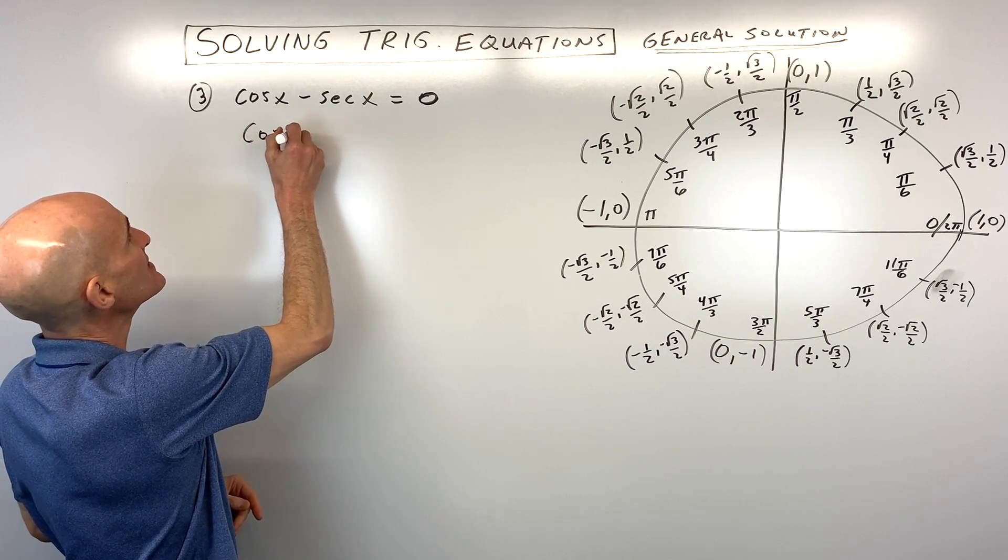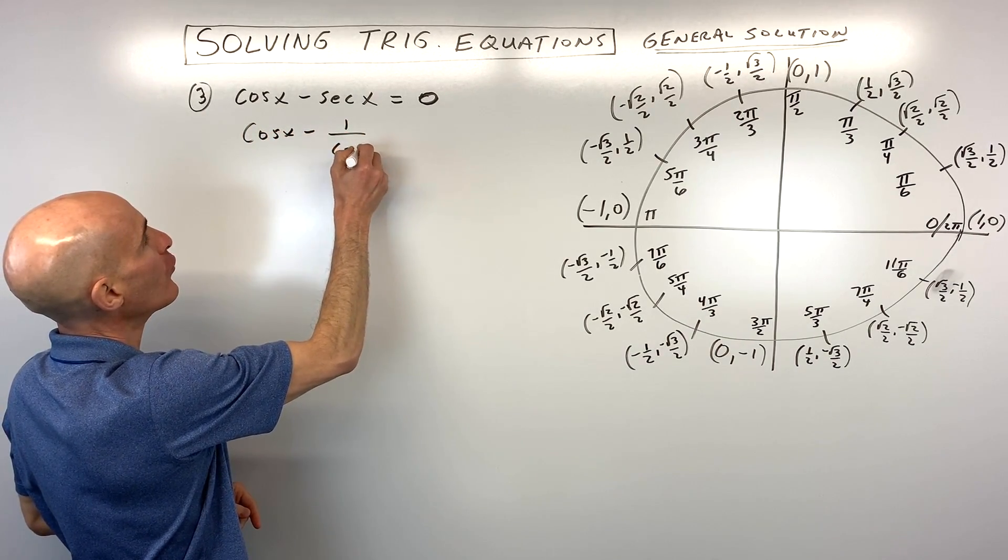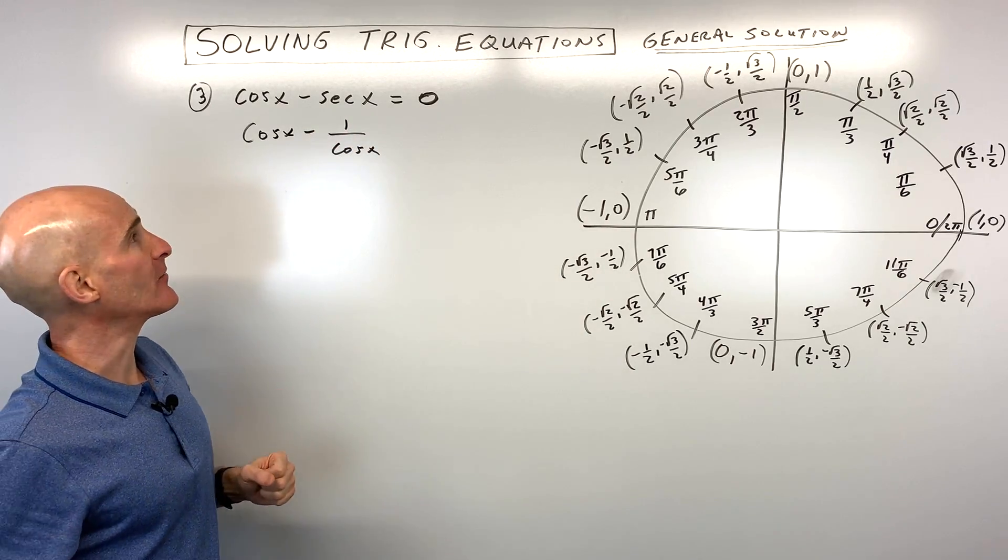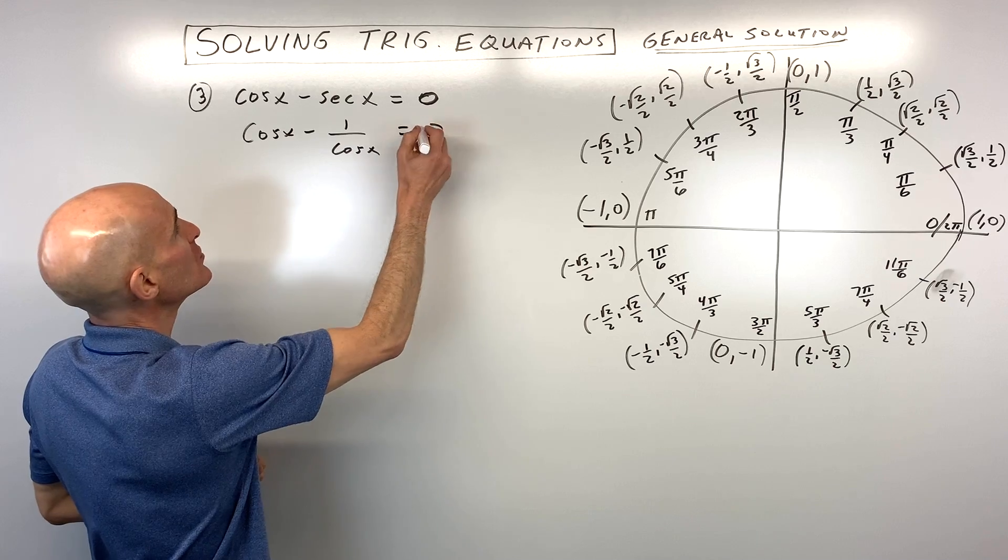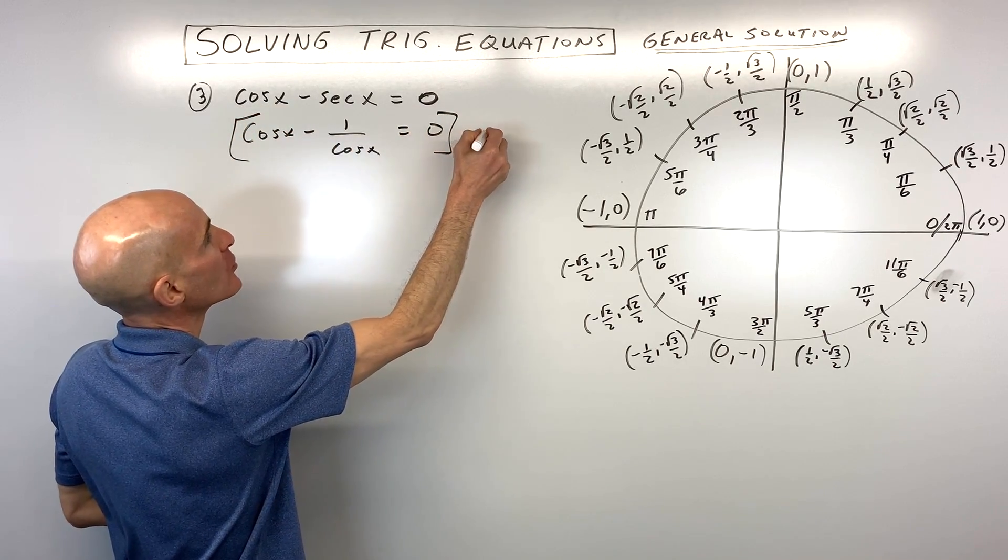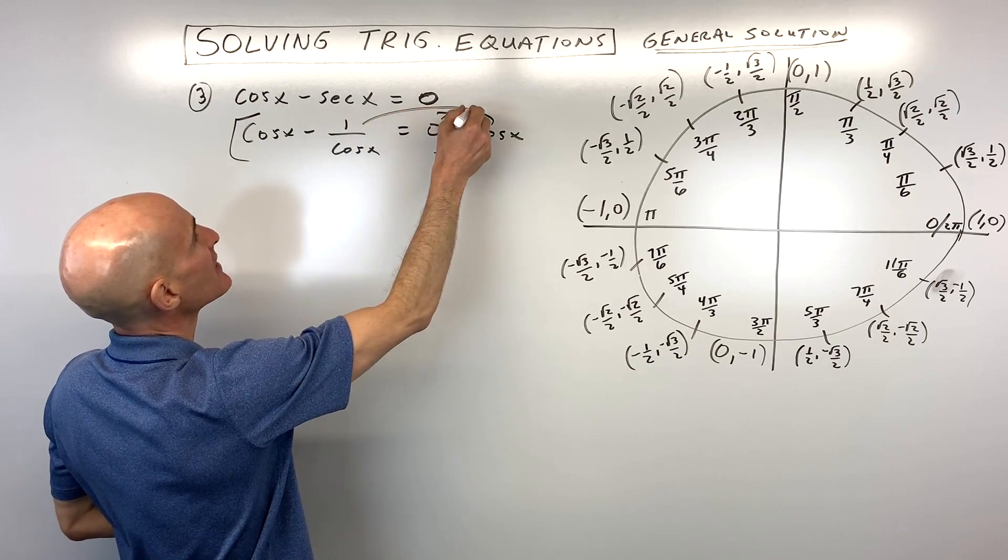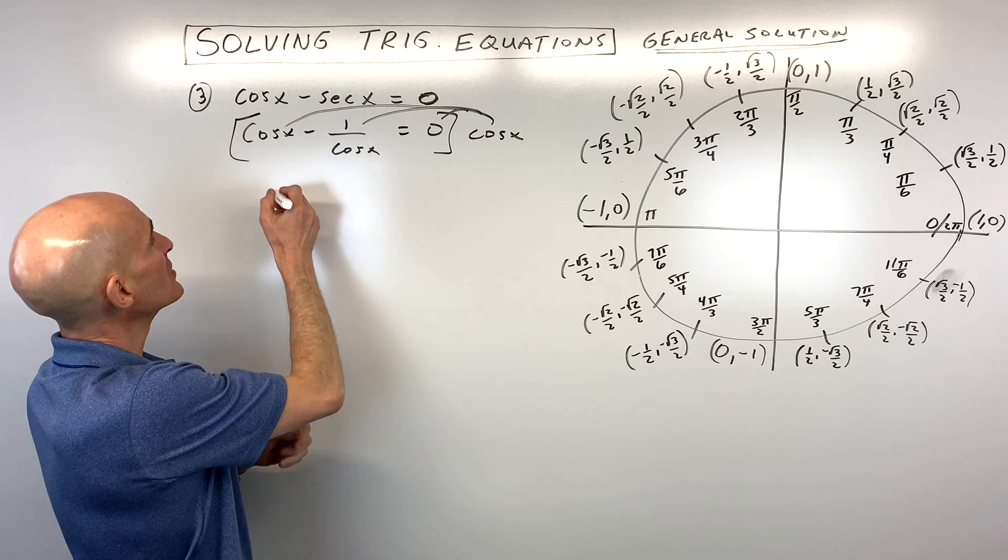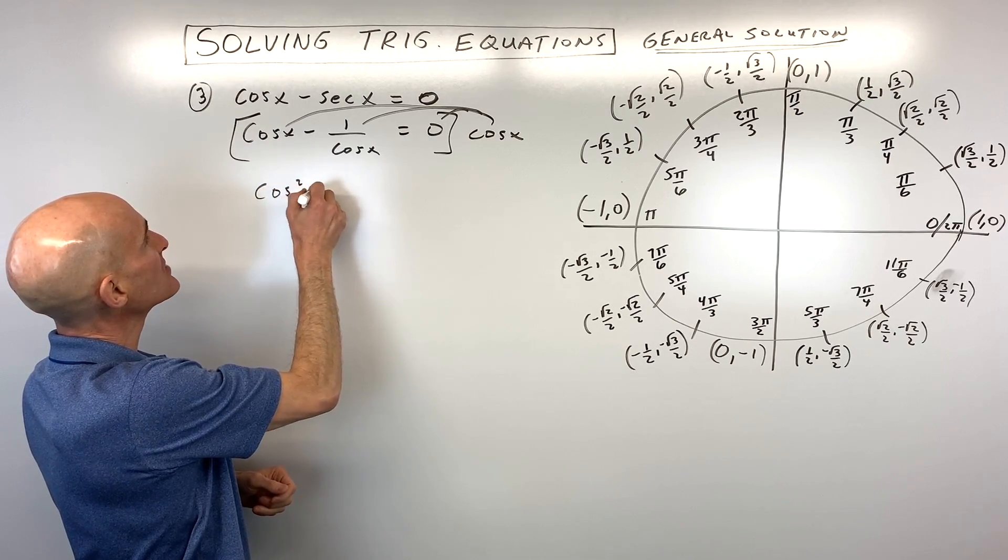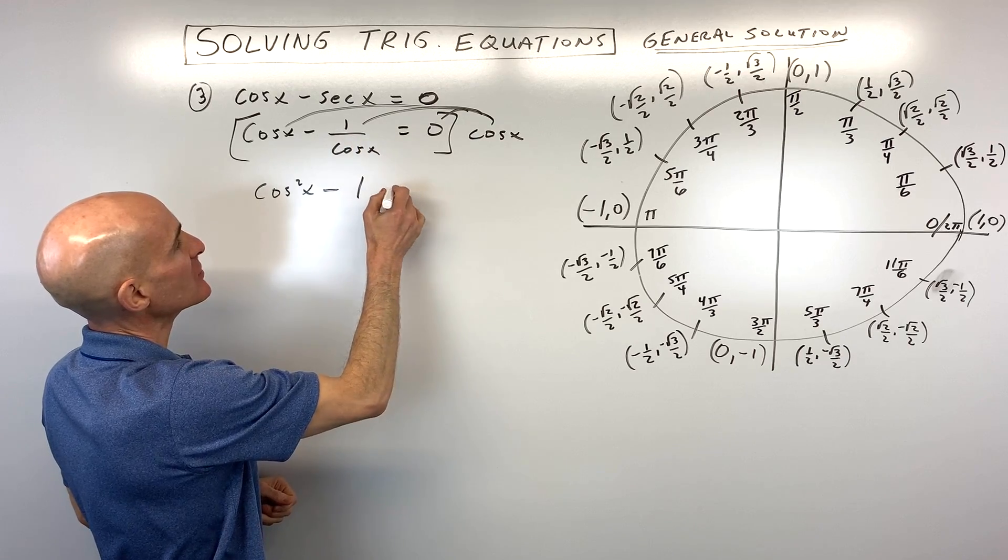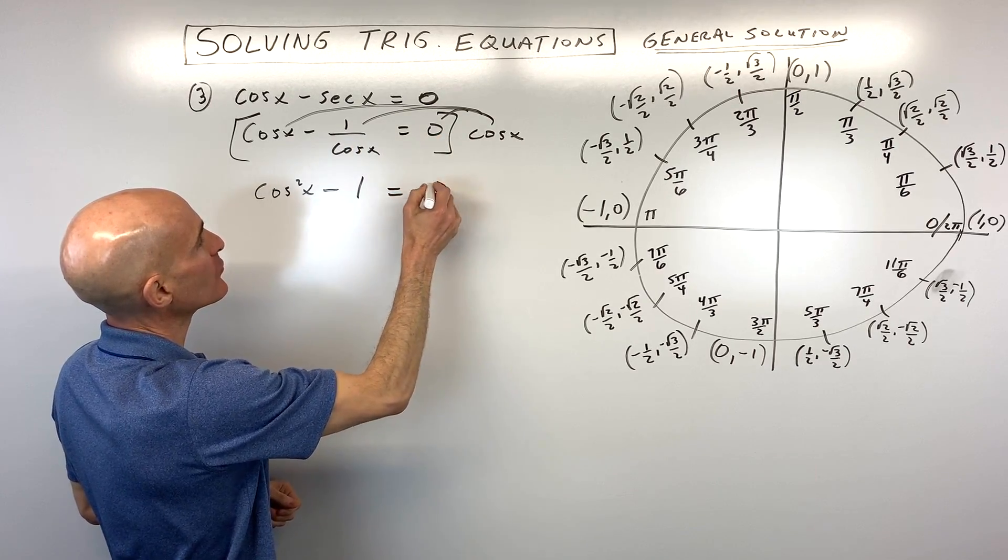Here what we're going to do is we're going to change the secant of x into 1 over cosine of x. Because remember, secant is a reciprocal of cosine, right? And so now what we're going to do is we're going to clear this denominator here by multiplying through by the cosine of x. So I'm going to distribute that cosine of x to the left and right sides of the equation, keeping it balanced. So this is going to give us cosine squared of x minus 1, because here these are canceling numerator and denominator, and 0 times anything, of course, is 0.